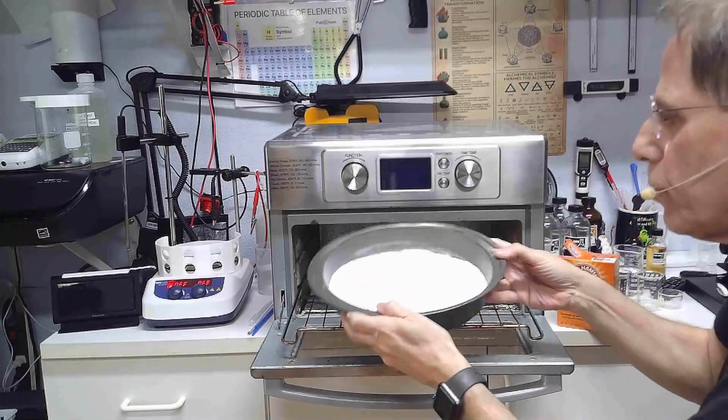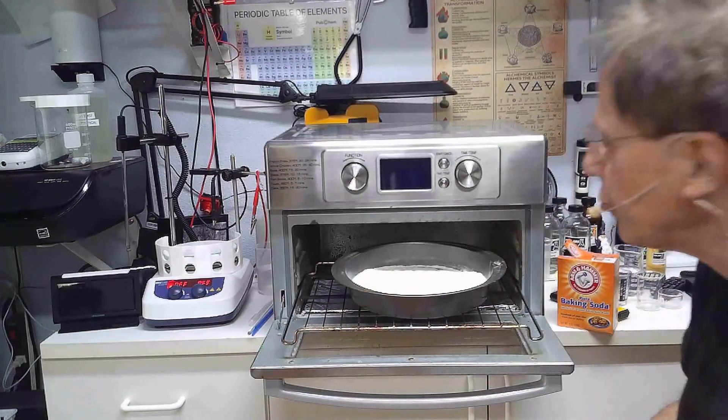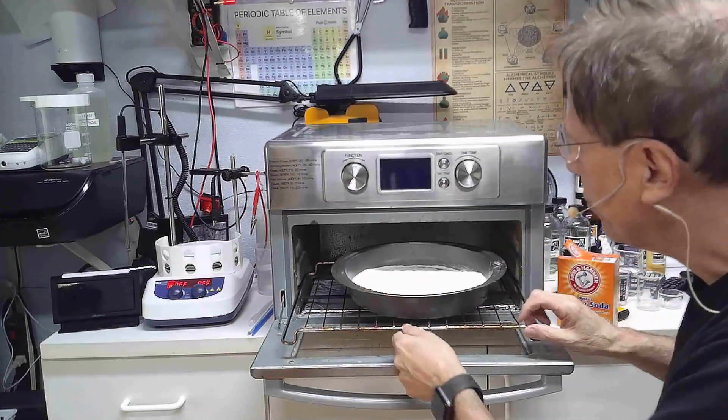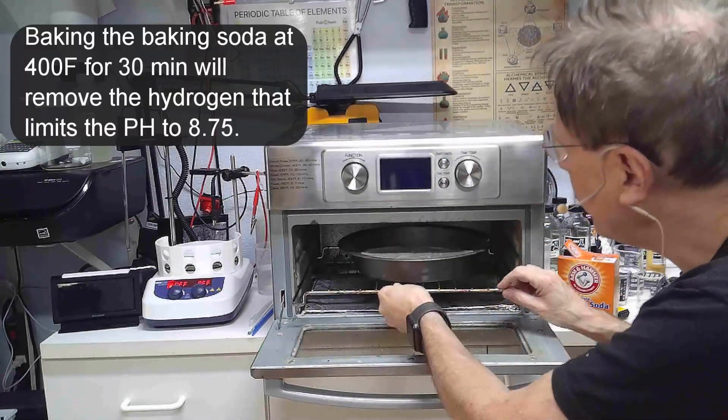Now what makes the difference between baking soda and washing soda is hydrogen. Baking soda has got hydrogen in it and the hydrogen lowers the pH. So we are going to bake the baking soda, we're going to put it in here like this.